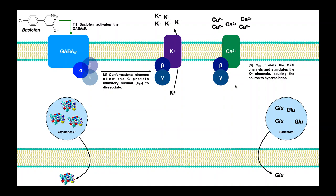That prevents calcium from influxing into the axoplasm. Additionally, the inhibitory subunit binds to the voltage-gated potassium channels and activates them, which facilitates potassium efflux out of the cell. To be clear, these GABA-B receptors are distributed all over the neuron — on the axon terminal, the soma, and the dendrites. We consider the voltage-gated calcium channels at the axon terminal because inhibiting calcium influx there inhibits exocytosis of the neurotransmitters.